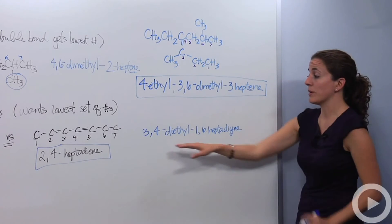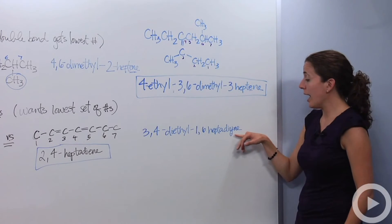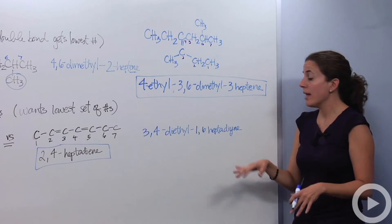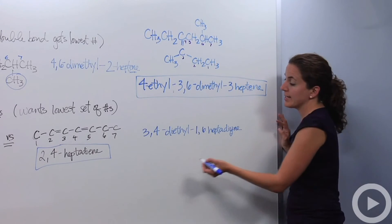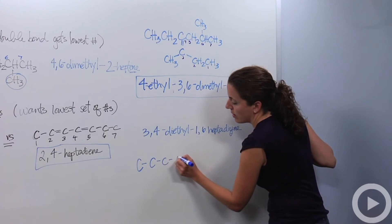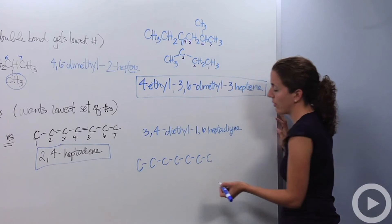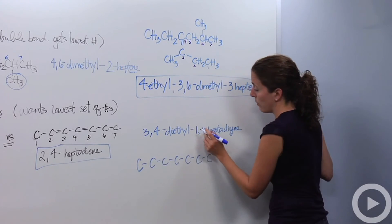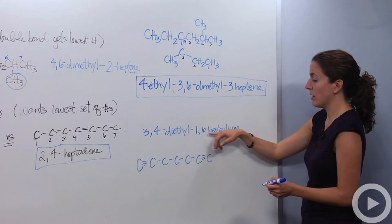Alright, let's actually draw this one out. We have 3,4-diethyl-1,6-heptadiene. Now, yne tells me the triple bond. It doesn't matter. Triple bond, double bond, naming is exactly the same thing. It just tells you where the triple bond is rather than double bond. Same exact thing. So heptadiene tells me that there's seven carbons. Three, four, five, six, seven. One, two, three, four, five, six, seven. There are two triple bonds. So between the first and second and this last one, there are triple bonds telling me one, six, and the diene tells me that there are two of them.